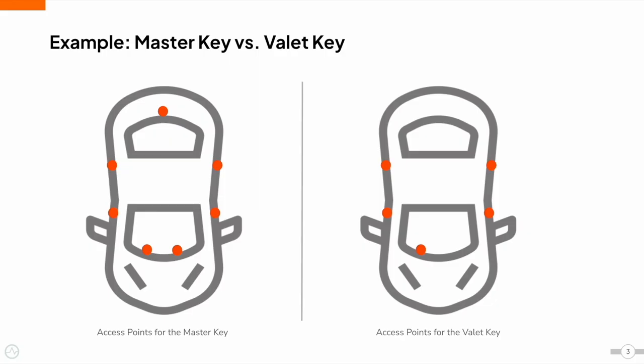To understand Access Delegation a bit more, let's take an example. Let's consider the functionality of a Master Key and a Valet Key. The Master Key enables you to control all the access points of your vehicle, including the glovebox and the boot. However, the valet key only supports functionality that is sufficient for a valet to park the car and has no access to the glovebox or the boot. It only allows opening the driver's door and starting the car.